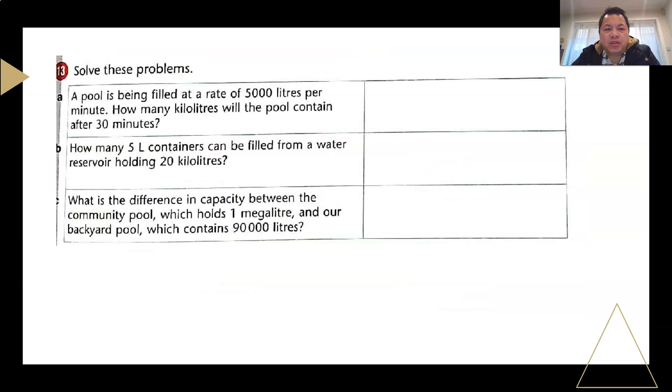Moving on to problem-solving questions. I'm not going to give you the answer, I'm going to give you some hints to solve these problems. They say the pool is being filled at a rate of 5,000 liters per minute, how many kiloliters will the pool contain after 30 minutes. So, first and foremost, you need to find out how many liters of water will there be in the pool after 30 minutes, so it's just 30 times this.